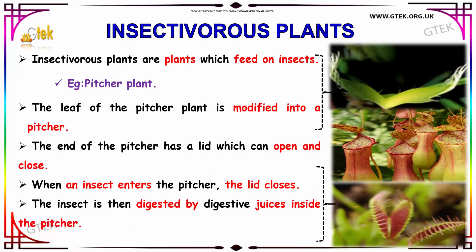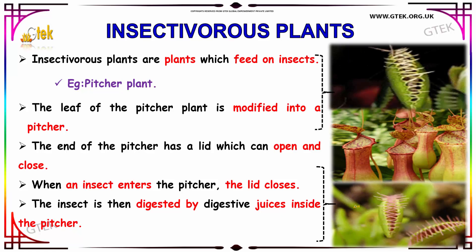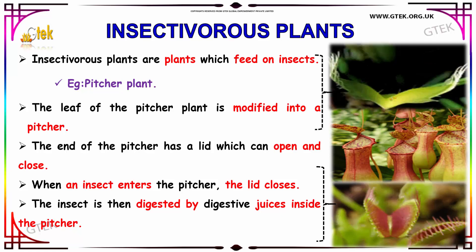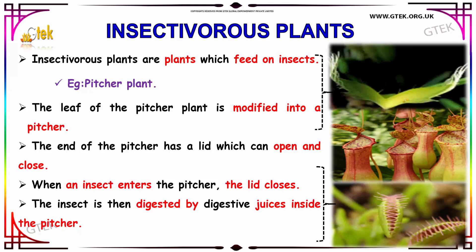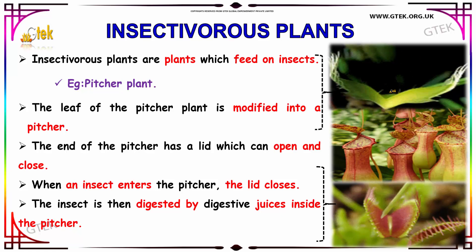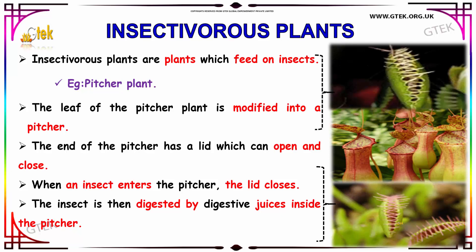Now we are going to see about insectivorous plants. Insectivorous plants are plants which feed on insects. A well-known example is the pitcher plant. The leaf of the pitcher plant is modified into a pitcher shape, with a lid at the end that can open and close. When an insect enters the pitcher, the lid closes and the insect is digested by digestive juice inside the pitcher.